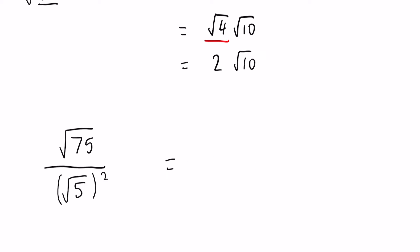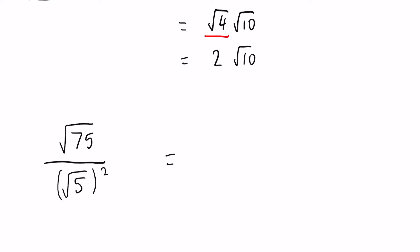Okay, slightly harder one this time and slightly different format. So this is actually the same meaning as just division. So root 75 divided by the square root of 5 squared. But obviously with a fraction, it's just a simpler way of writing it sometimes.